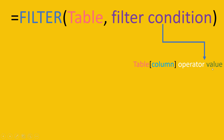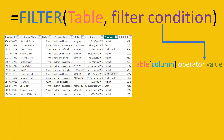Then you need to provide the value. For example, if I want to filter all data where the transaction amount is greater than 4000, I would choose the transaction column, set the operator to greater than, and write 4000.